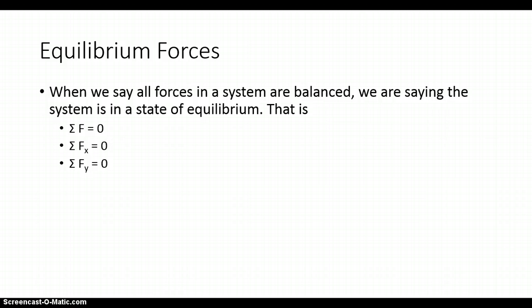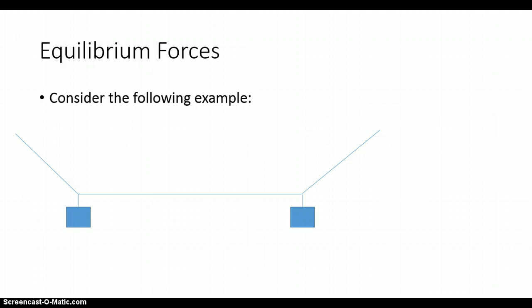To explore this topic a little bit more, we will look at an actual example. In this example, we have a system of strings, and along with the system of strings, we have two masses hanging from it. If this system is not moving in the x direction, not moving in the y direction — nothing moving up, nothing moving down — then we say that this system is in equilibrium. For equilibrium, remember, all forces need to be equal to zero.